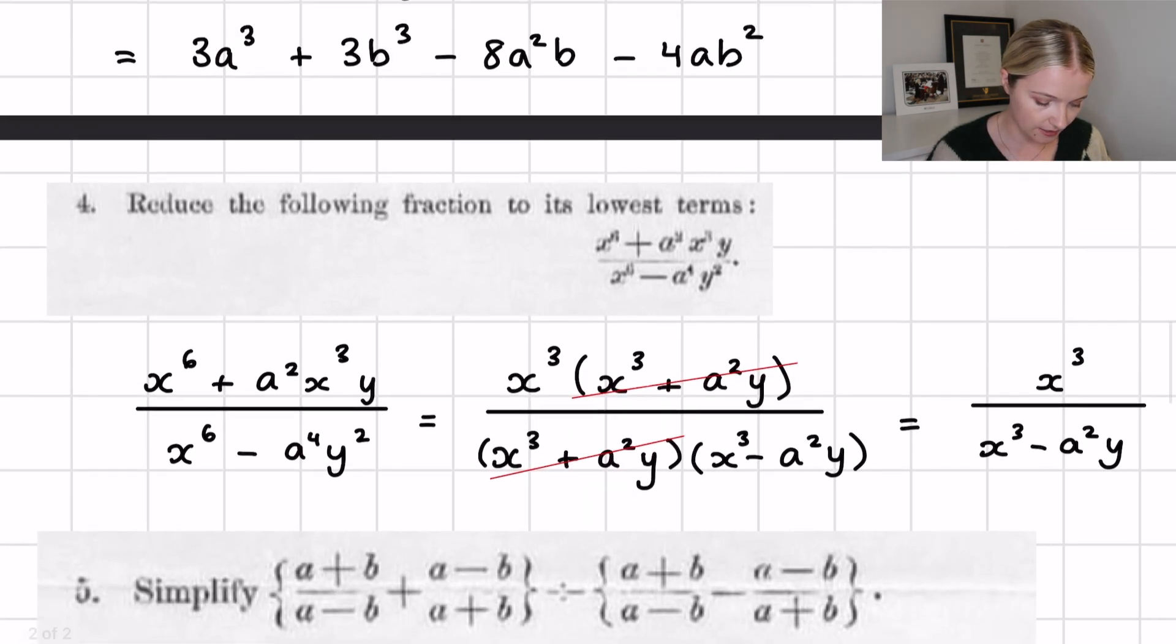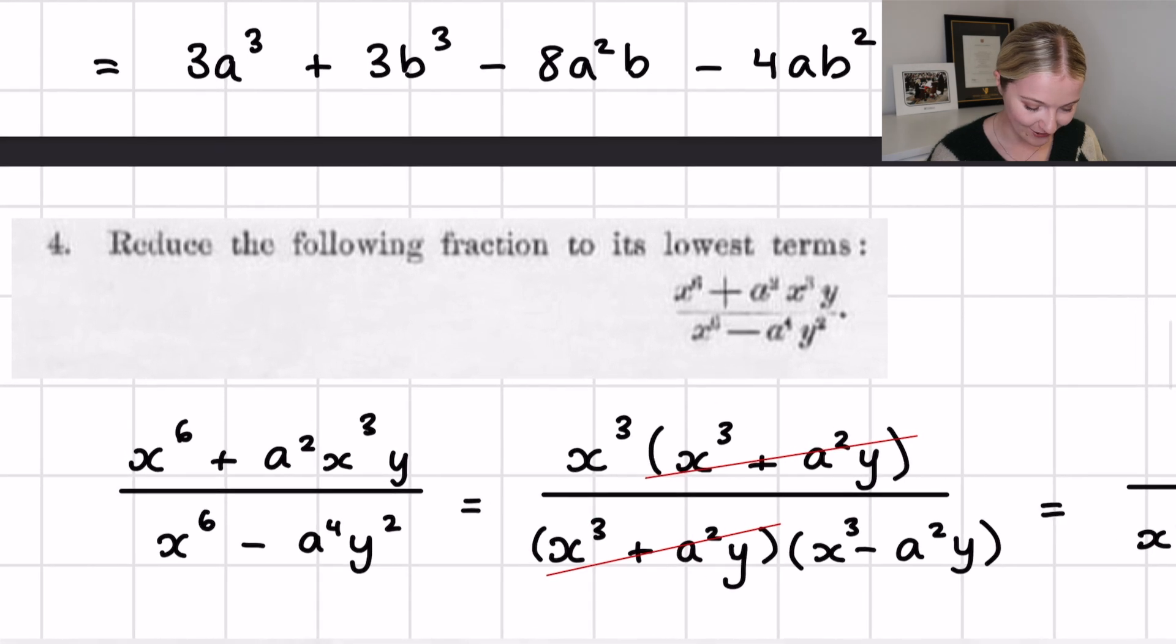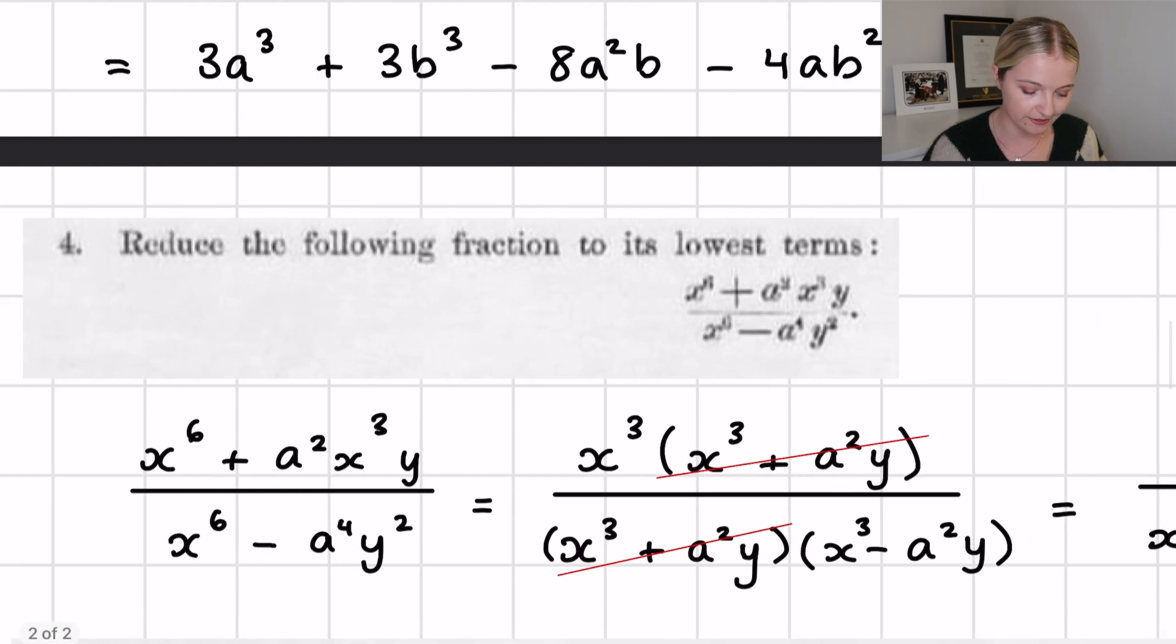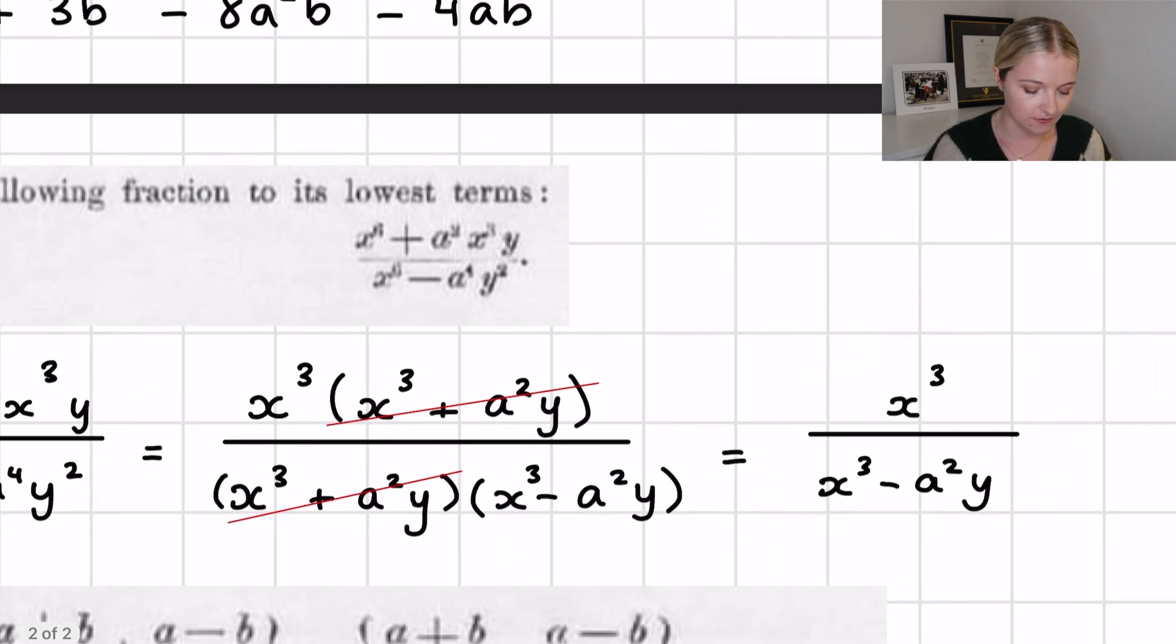Now question number four says reduce the following fraction to its lowest terms. I think this here is an x to the power 6 plus a squared x to the power 3 multiplied by y. The denominator is x to the power 6 minus a to the 4 multiplied by y squared. Again, we can factorize out an x cubed out of here. We can also notice that the denominator can be written in this form, and we have two brackets that are exactly the same so we can cancel them, and then this returns a very nice simplified form which is x cubed divided by x cubed minus a squared multiplied by y. That's given I have read this correctly. I think the way that the mathematics has been simplified here makes sense for the answer to be this.